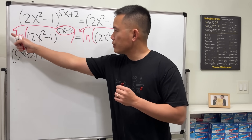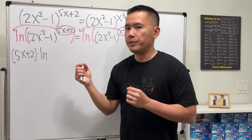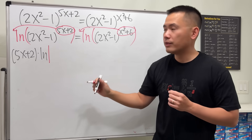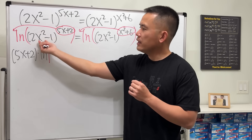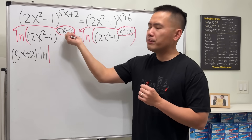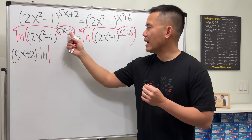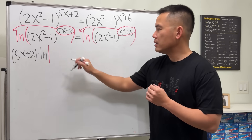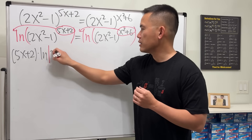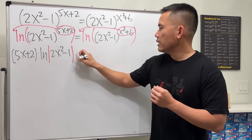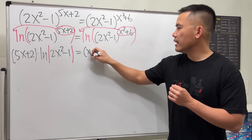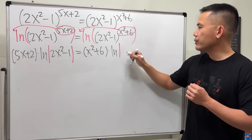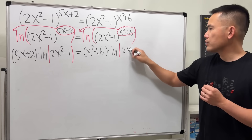We have to be extra careful — this expression could be negative. When we bring the power to the front we need to use the absolute value, because if the inside was negative, say negative 1 to an even power, that would be positive, but once the power is out front we can't have a negative inside the ln. So we write: (5x + 2) · ln|2x² - 1| = (x² + 6) · ln|2x² - 1|.